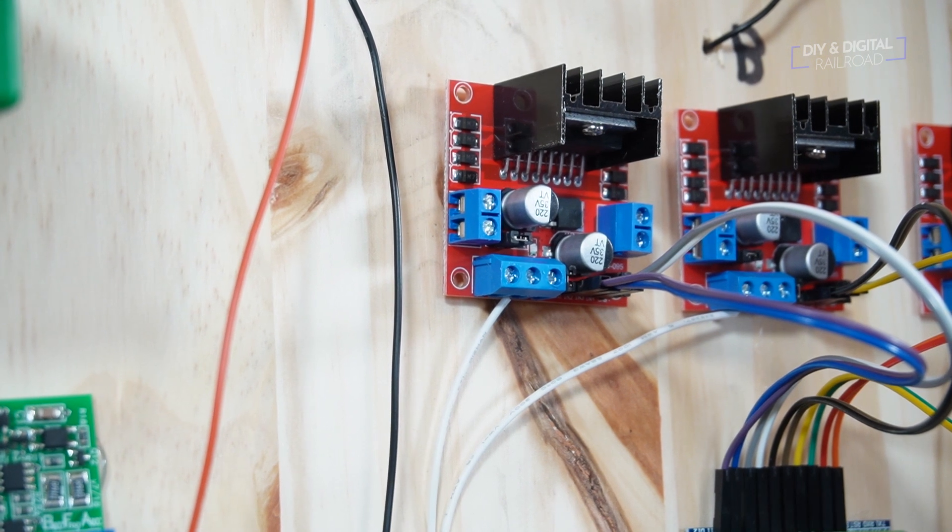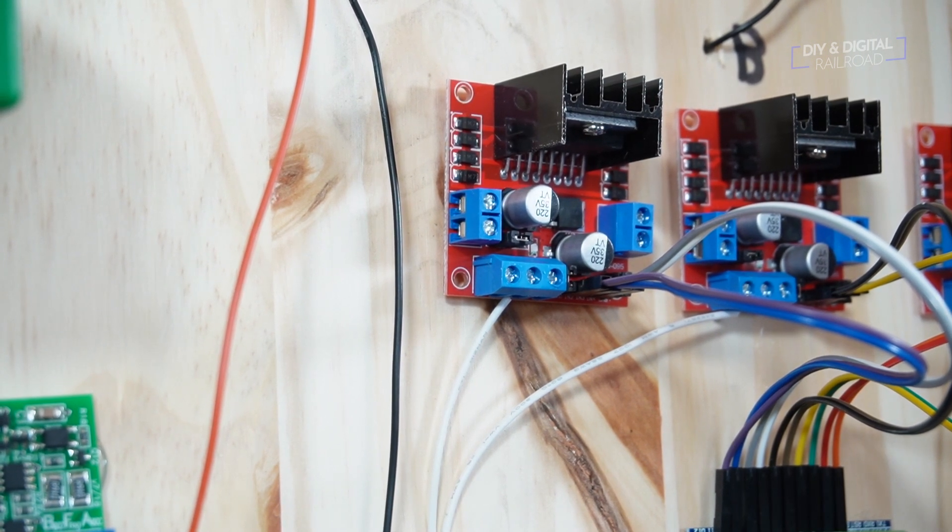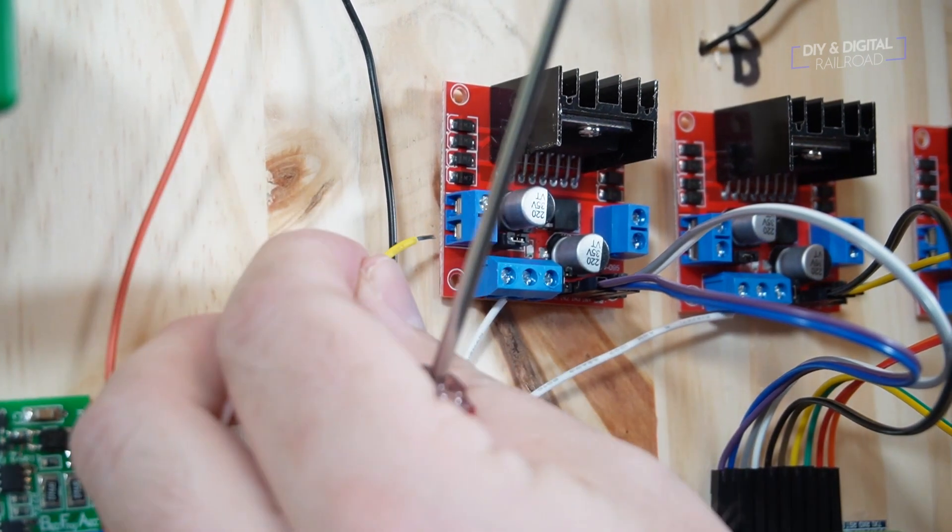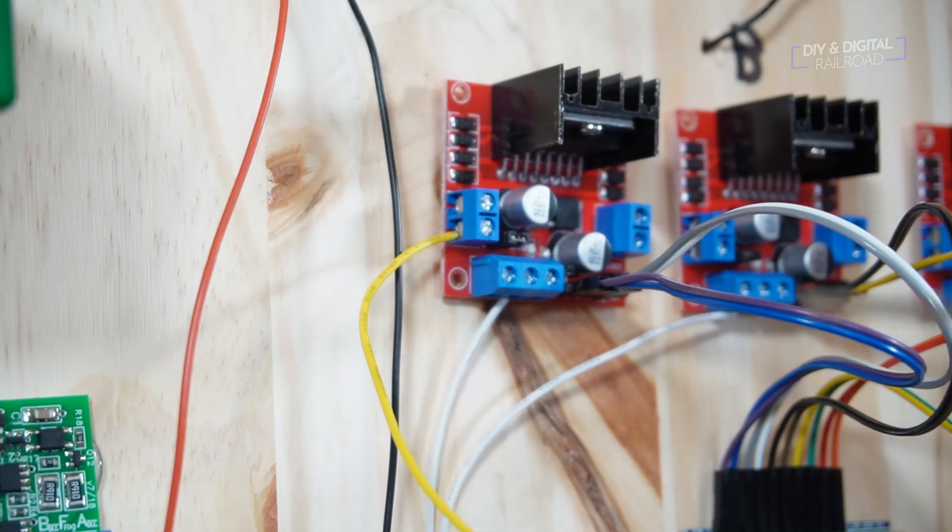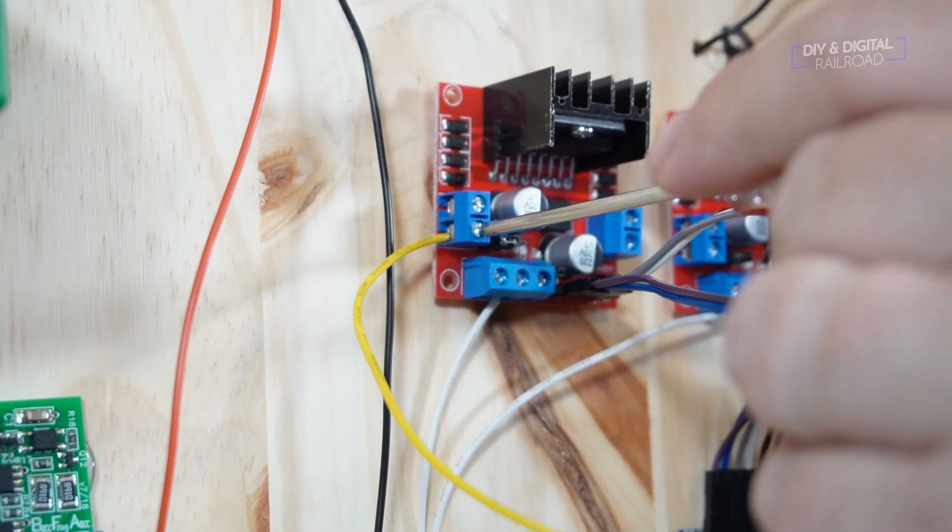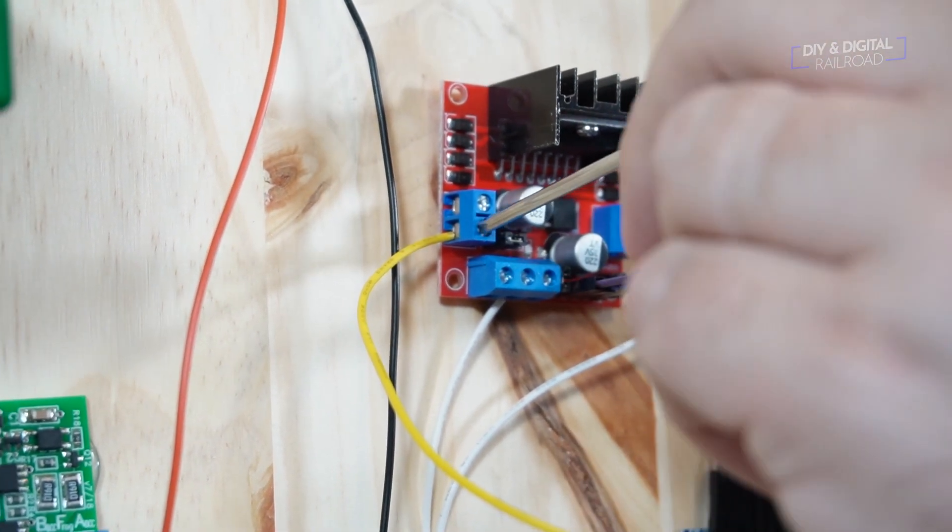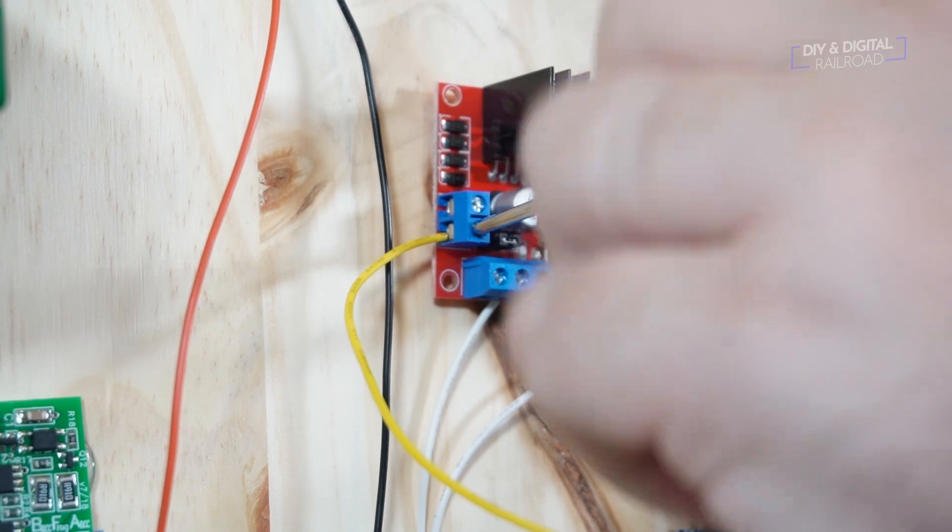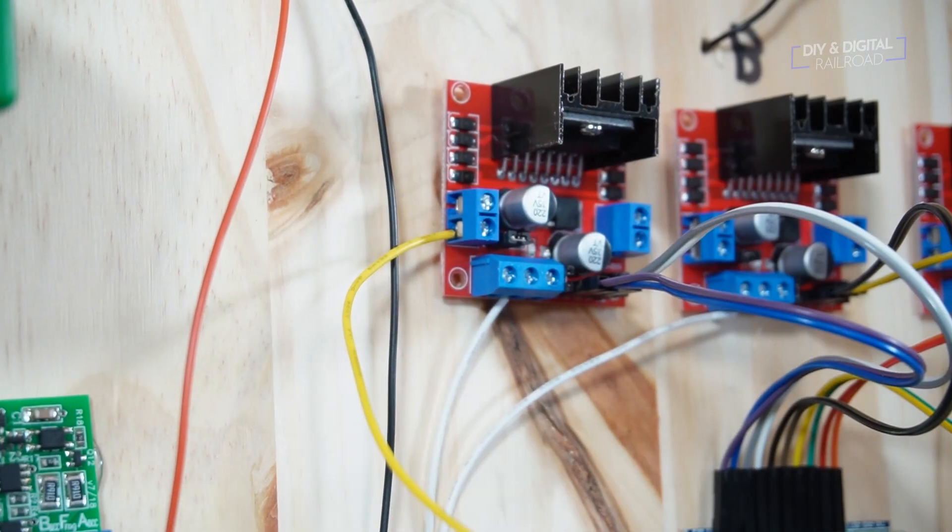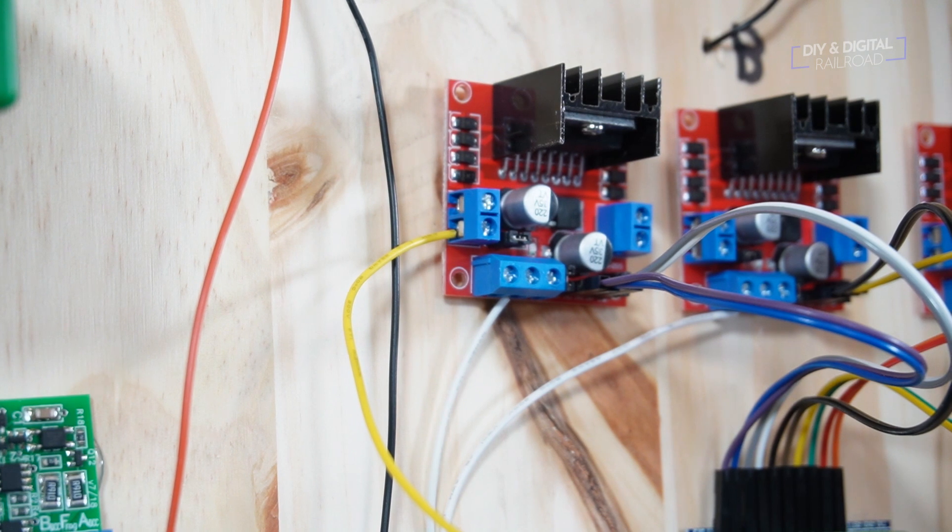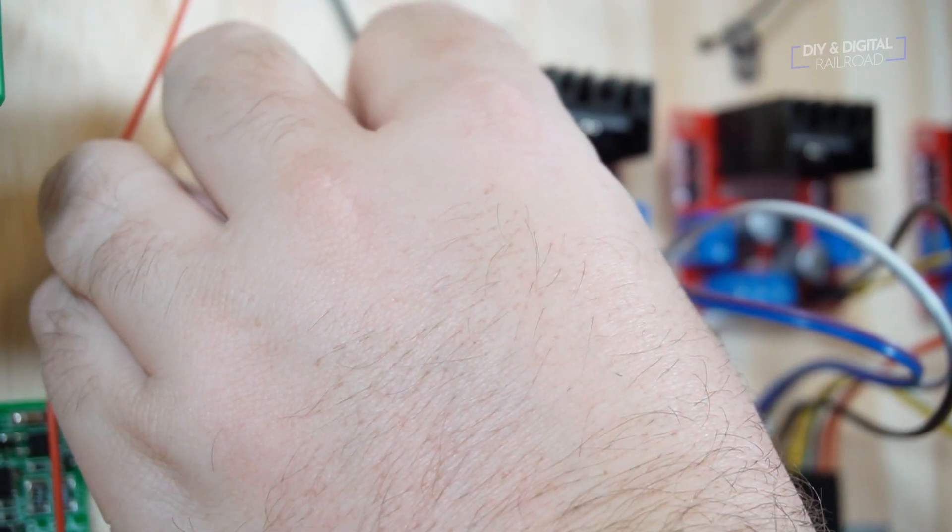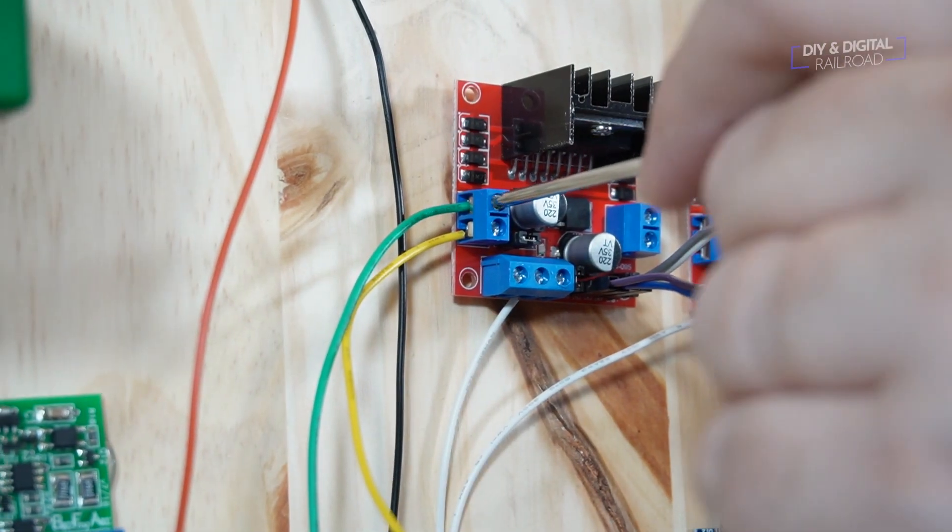The L298M motor driver can control two tortoise switch machines at the same time. One of the two terminal connections is for one motor and the other is for the second one. All you have to do is connect your wires there. It doesn't matter which one goes where. It only matters if you are going to be doing some signaling control by the Arduino with the tortoise, then you'll need to know which one goes where so that you can have correct signaling, but that's a whole another issue and we're not tackling that today.